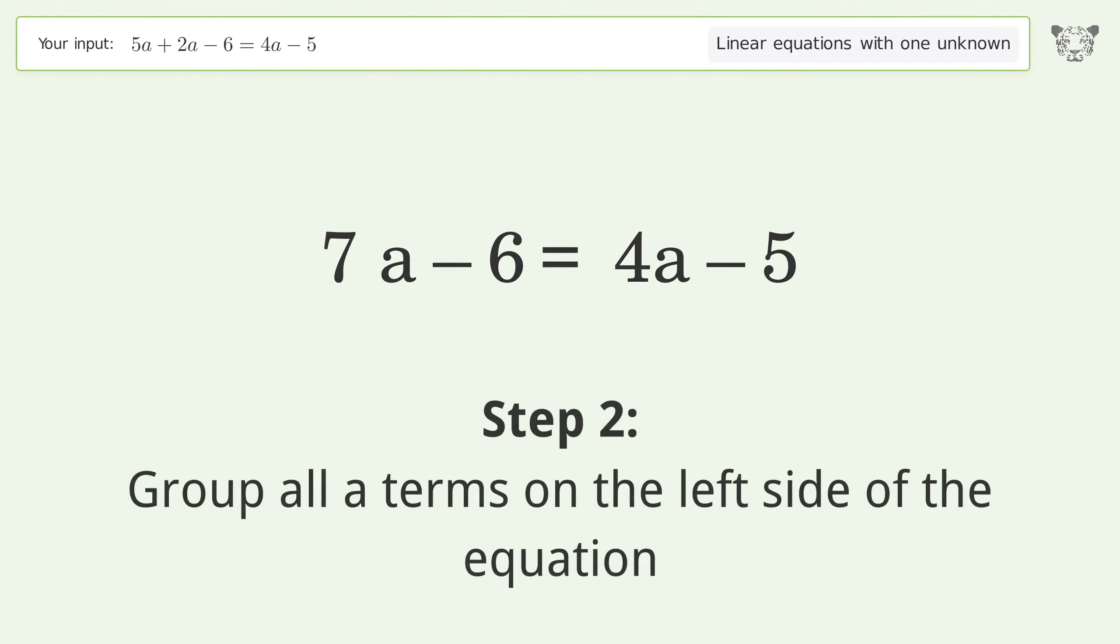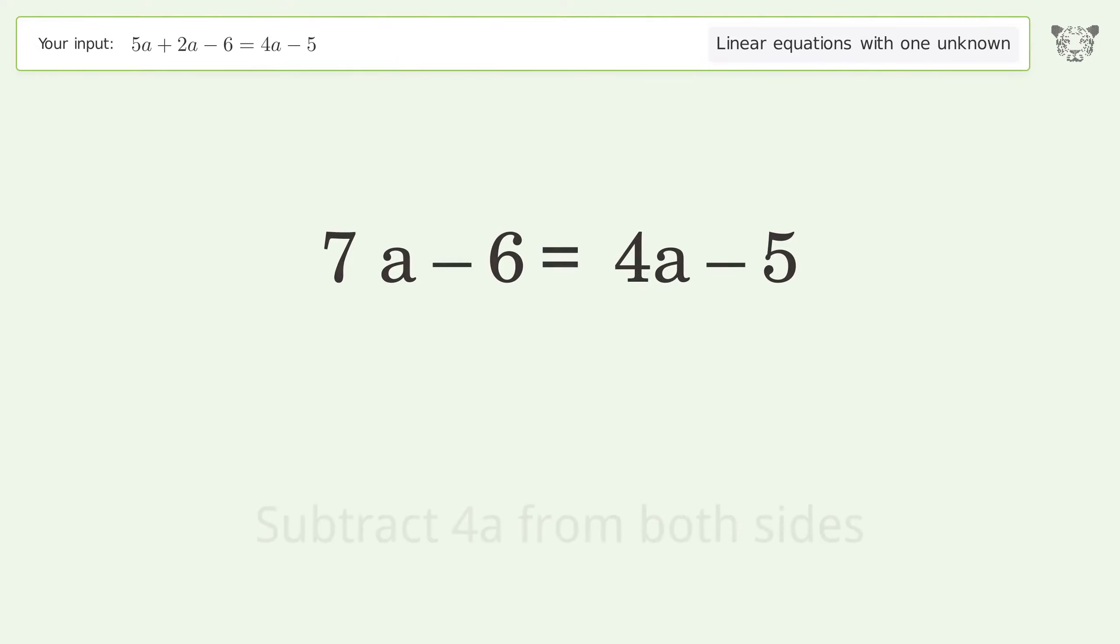Group all a terms on the left side of the equation. Subtract 4a from both sides. Group like terms. Simplify the arithmetic.